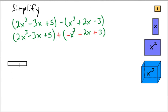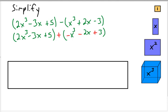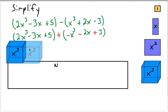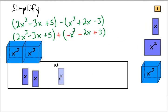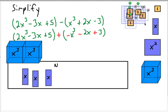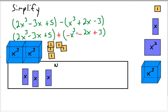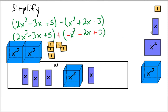Now we can set it up in the exact same way. Let me make my negative rectangle here. So we have 2x cubed — two of these tiles — and negative 3x, so I'll put 3 in the negative spot. I have 5 positive ones. Then I have a negative x cubed, so that goes here. Negative 2x, so those go in the negative area. And then positive 3, so 3 more go in the positive area. All right, so let's do some simplifying now.